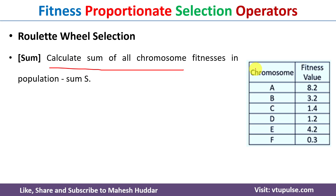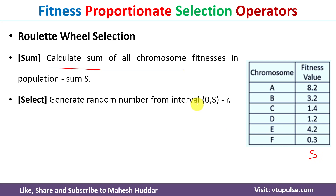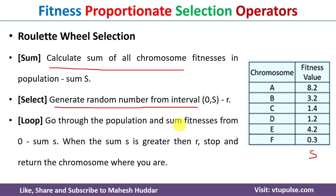The implementation of roulette wheel selection works as follows: first, calculate the sum of all chromosome fitnesses — call it S. To select one parent, generate a random number in the range 0 to S. Then calculate the cumulative sum of fitness values. For example, for chromosome A it will be 0 to 8.2; for B it will be 8.2 to 11.4 (adding 3.2); for C it will be 11.4 to 12.8 (adding 1.4).